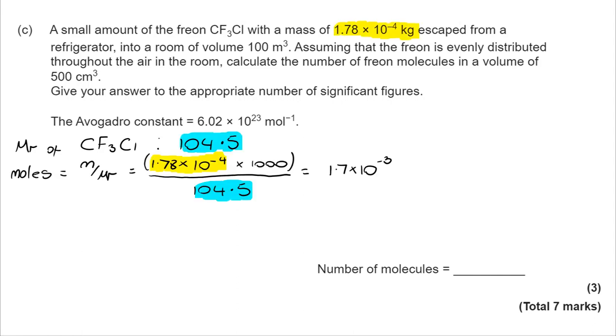From there, we can work out the number of moles. Now, we have been given the mass, but we've been given it in kilograms. So let's multiply that by a thousand. And then we're dividing that by the MR. And it takes us to 1.7 by 10 to the minus 3 moles.